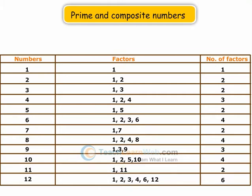There are numbers having more than two factors, like 4, 6, 8, 9, and 10, and so on. These numbers are composite numbers.